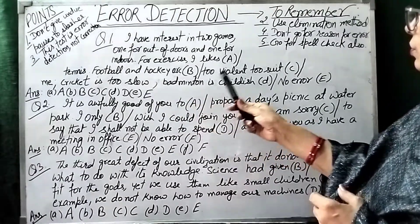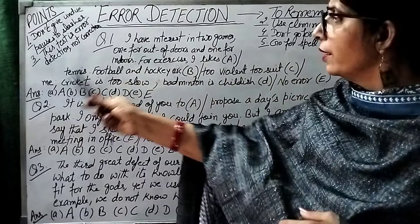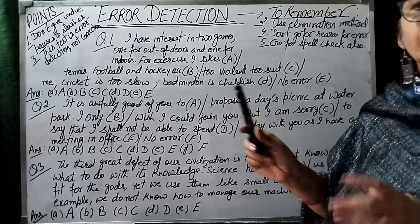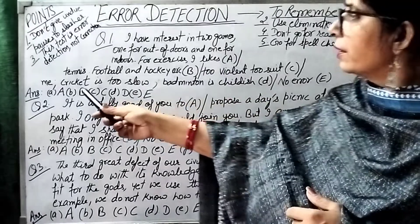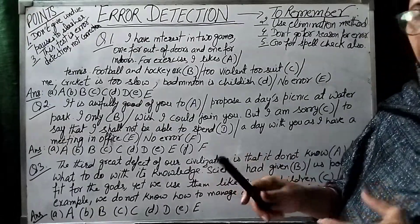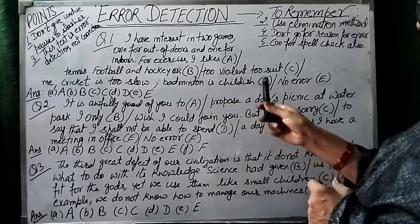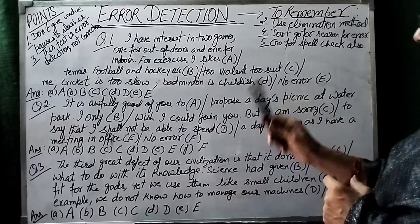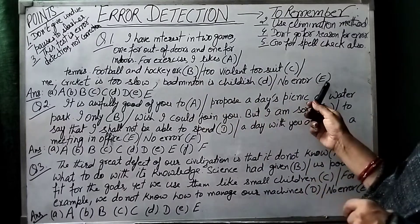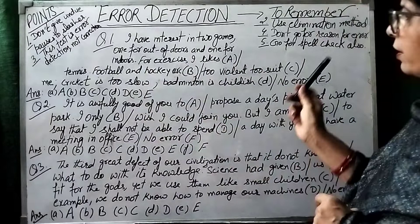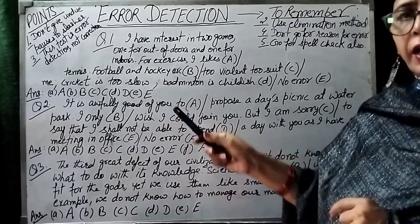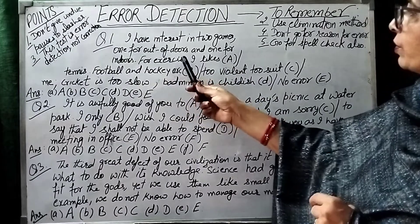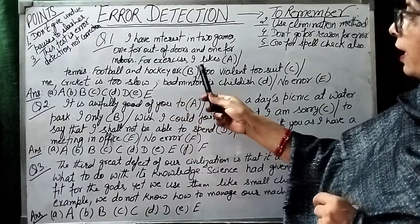So I like tennis. Football and hockey are too violent to suit me. Football and hockey are too violent to suit me. But this is very violent for me. I don't think that they suit me. Cricket is too slow. If you talk about cricket, I think that it is very slow. Badminton is childish. If we talk about badminton, I think that it is very childish. So this is our deep portion.